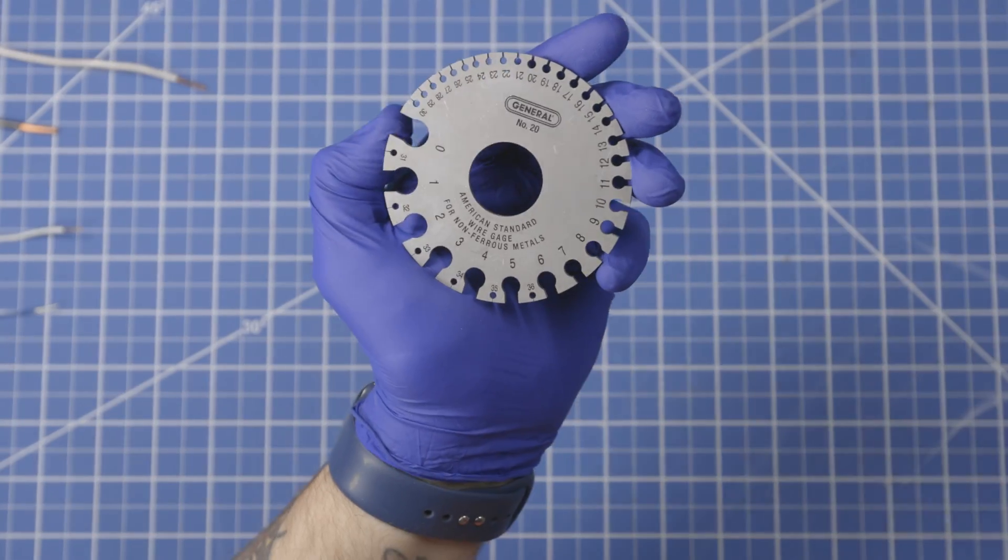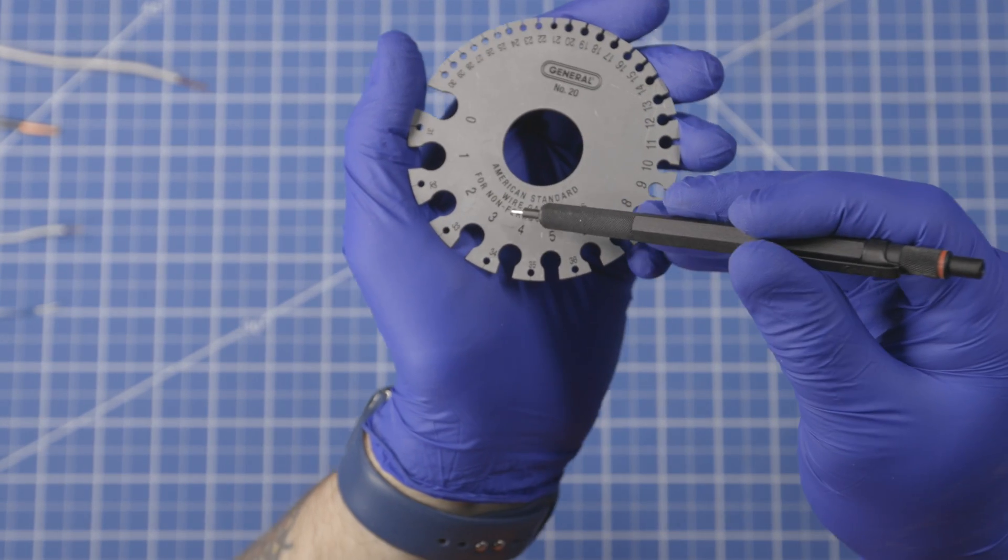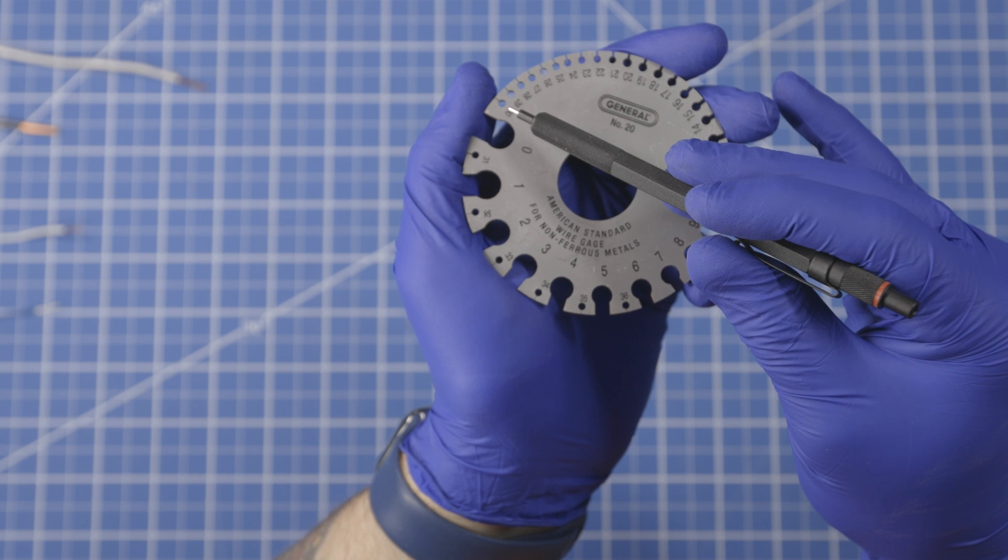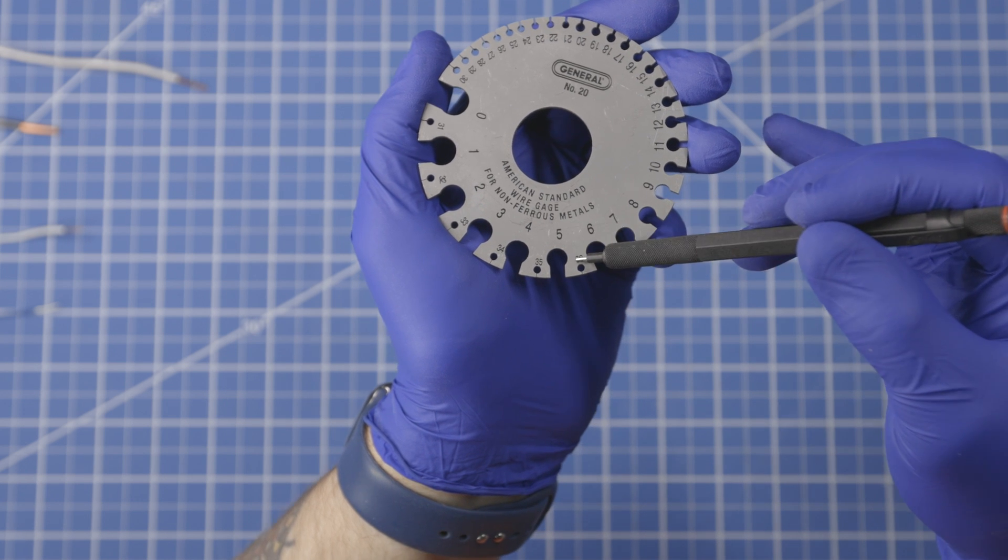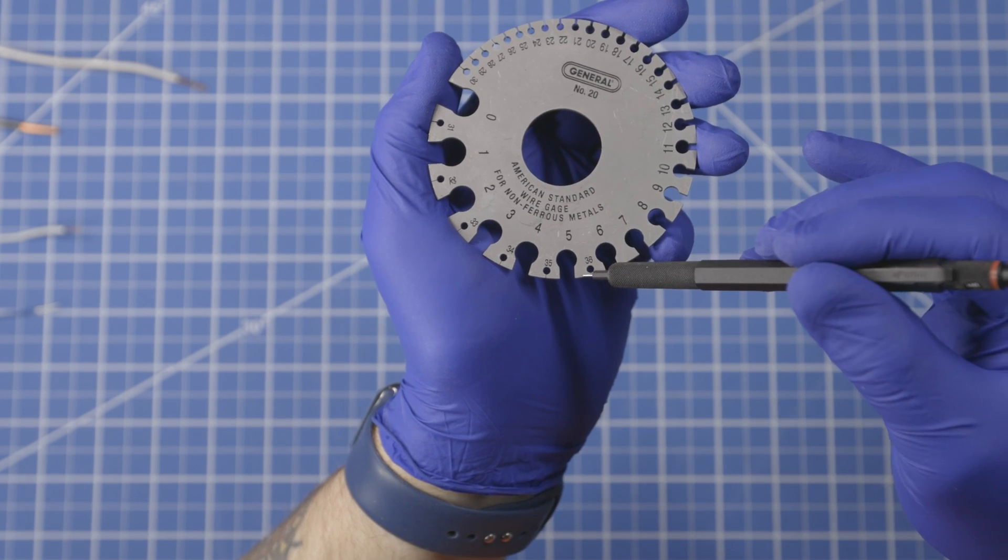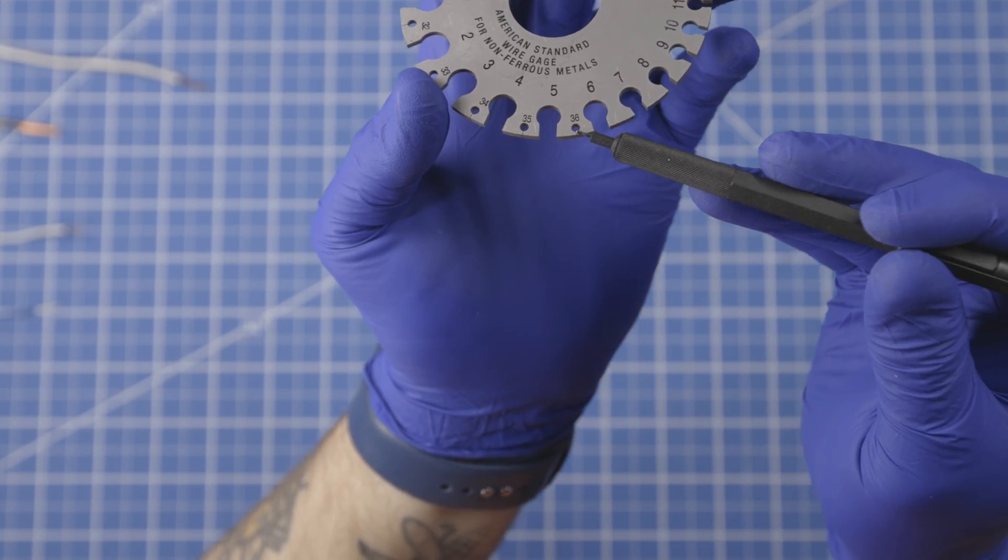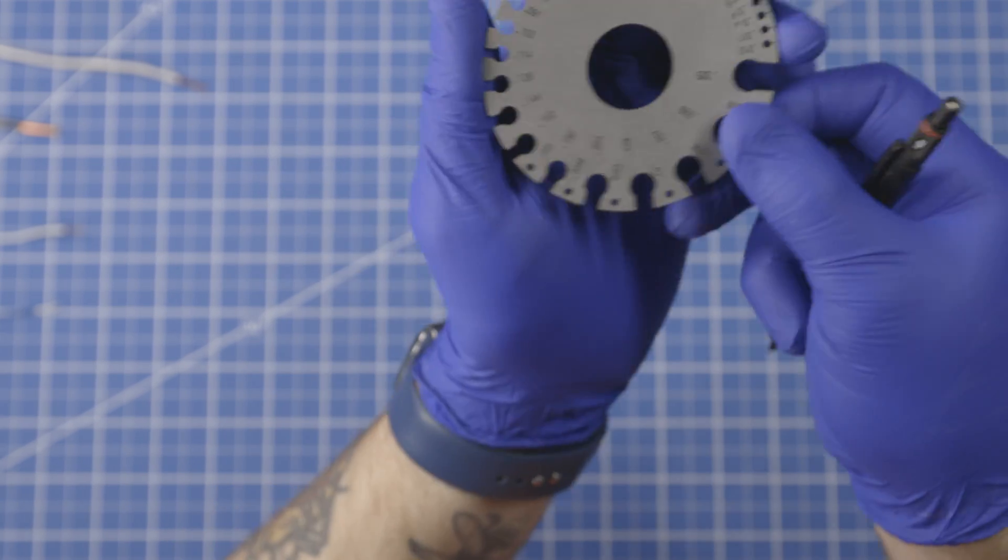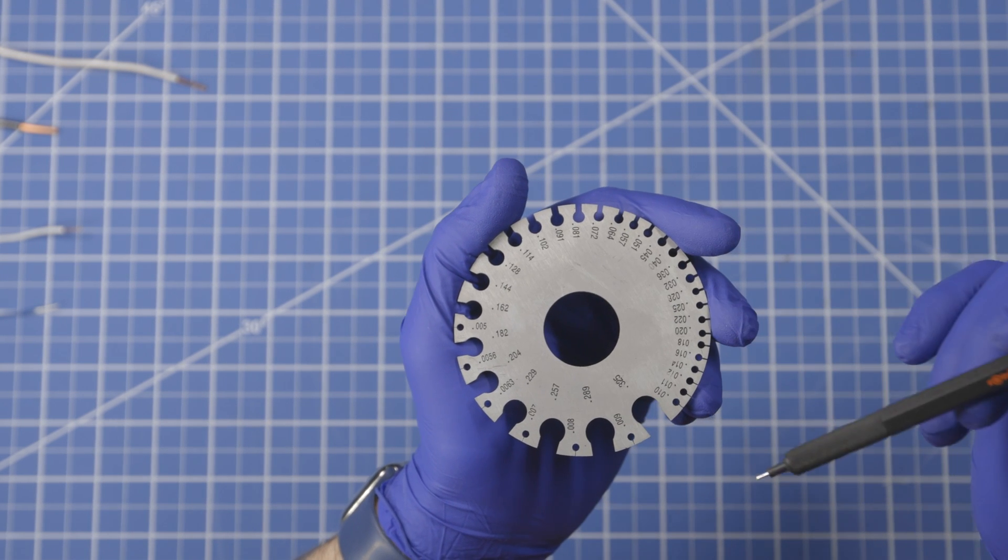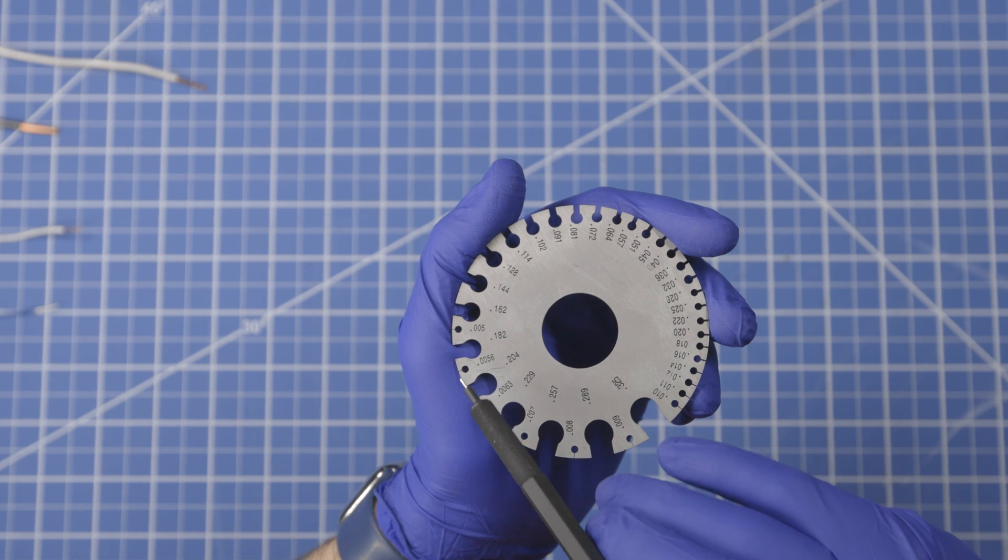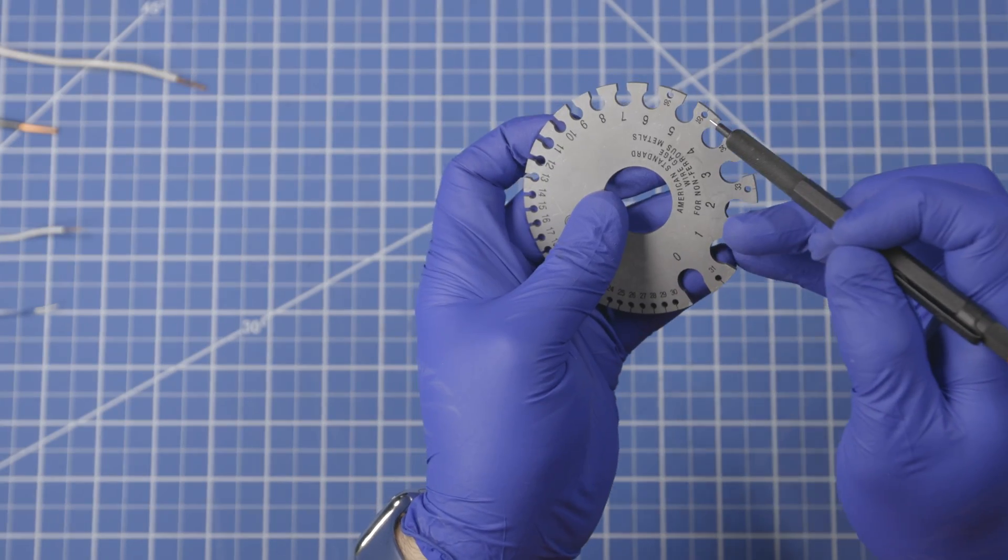Now this gauge goes from zero gauge, and then it proceeds around all the way to 30 at the end of the circle and then has 31 through 36 on the extensions there. Now obviously 36 is very, very fine. I don't know if we can even see that gap, but it is hair thin. In fact, it's 5000ths thin. And we know that because the back of the gauge has the sizes in decimal format in however many thousandths or in the case of some of these 10,000ths. So this is 56 ten-thousandths, for example, which is the 35 gauge.